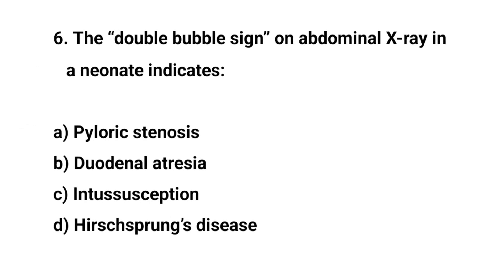Question No. 6. The double bubble sign on abdominal X-ray in a neonate indicates? The right answer is B: Duodenal atresia.